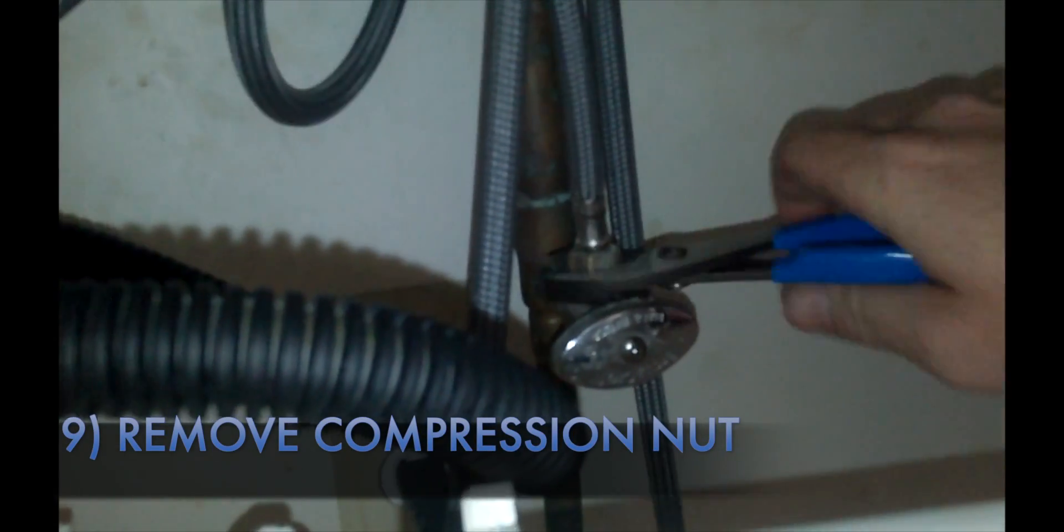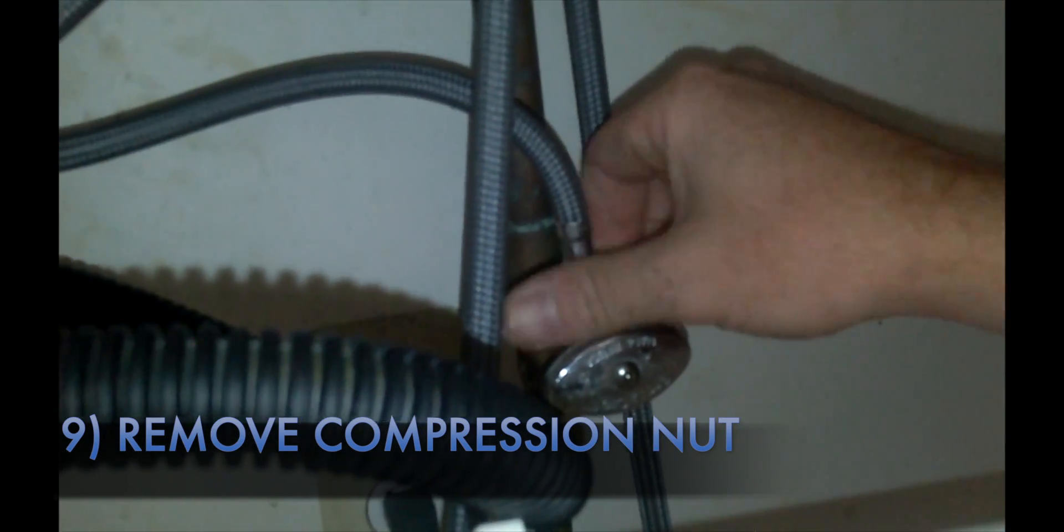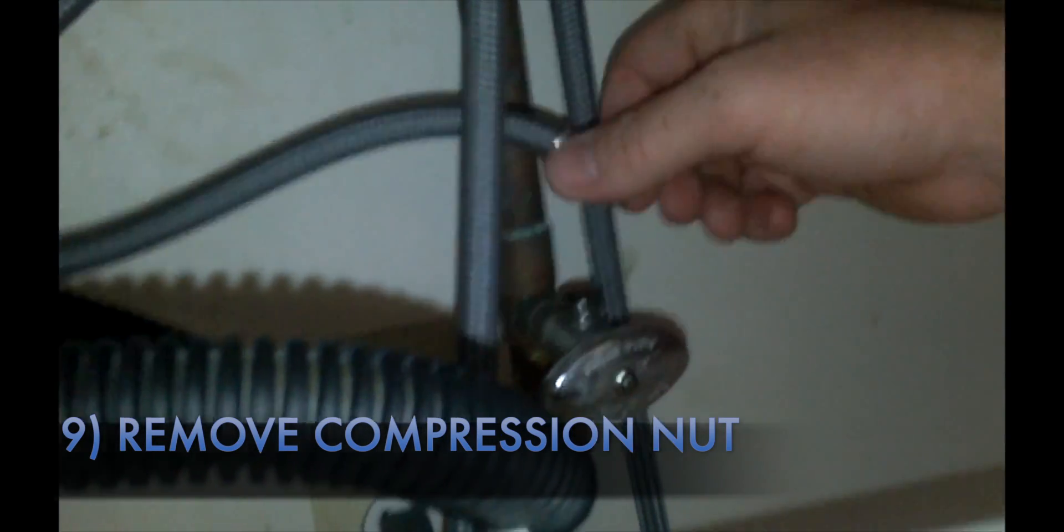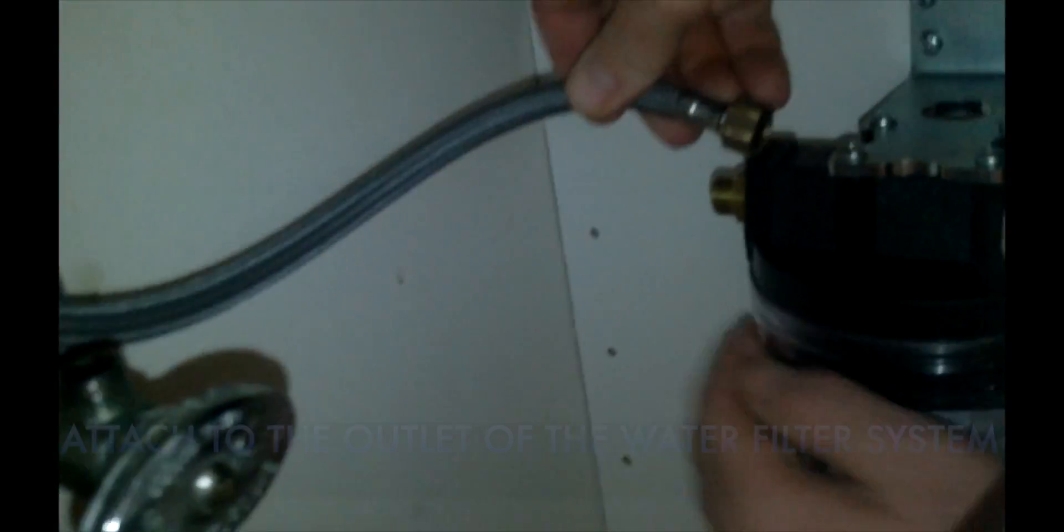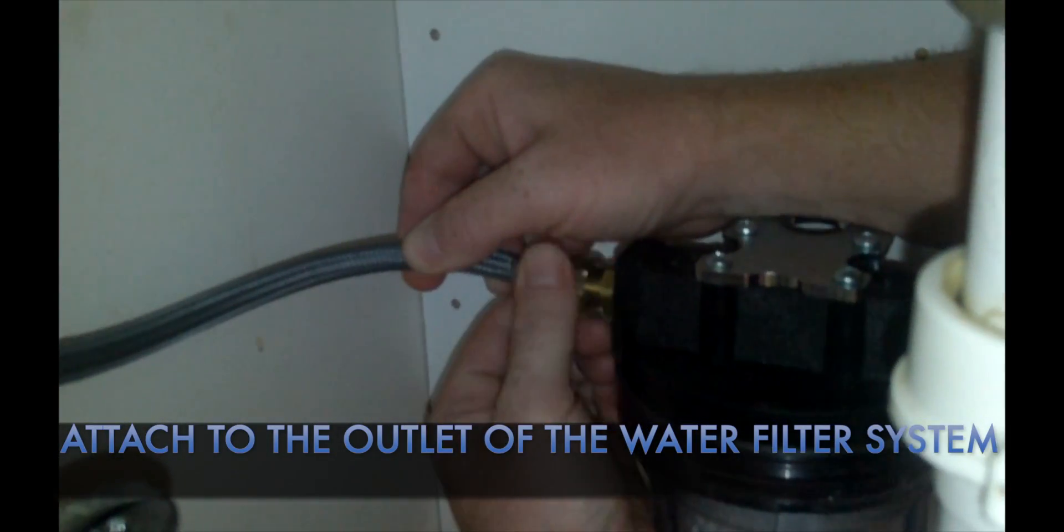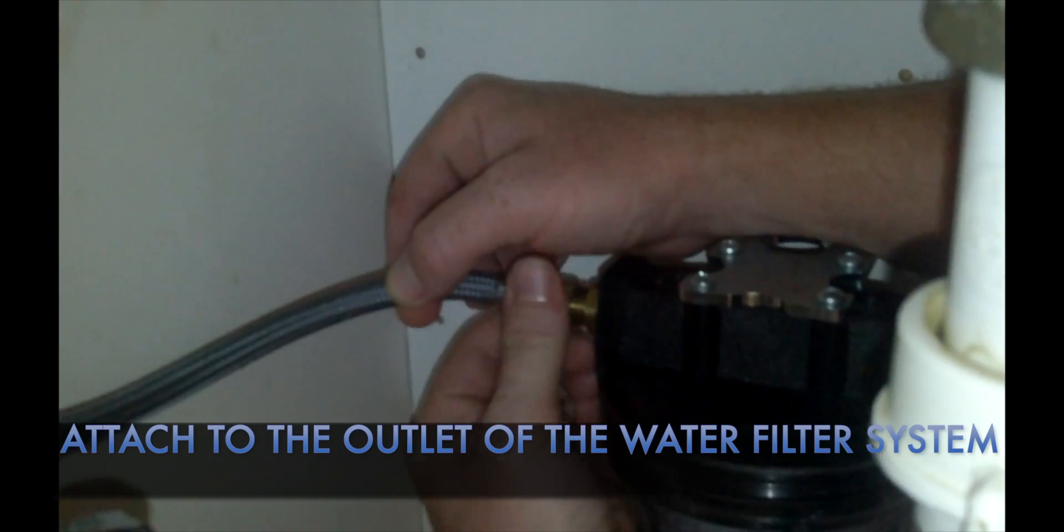Step nine. All sinks have a three-eighth inch compression nut and hose going to the faucet. You can simply remove the compression nut from the cold water line and attach to the outlet of the water filter system.